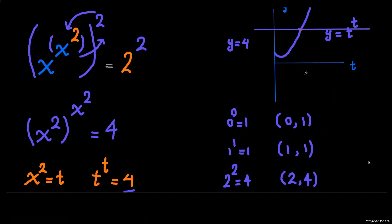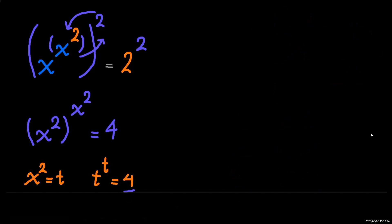Because we only have one intersection, we only have one solution. That would be t equals 2.